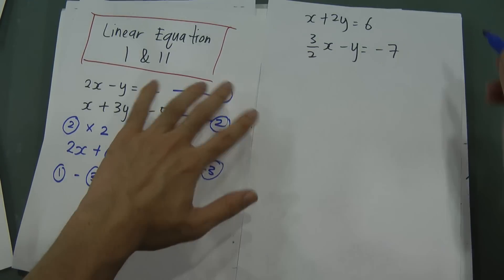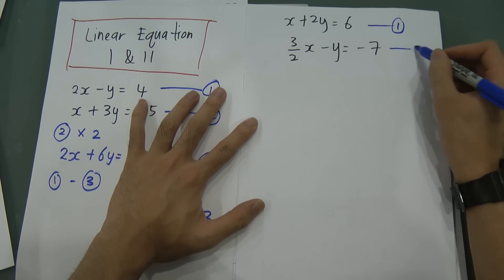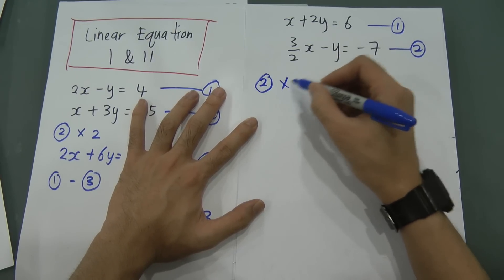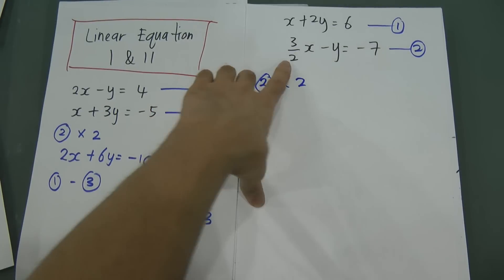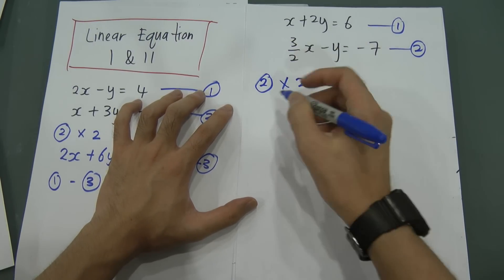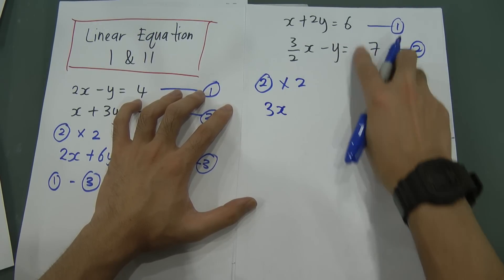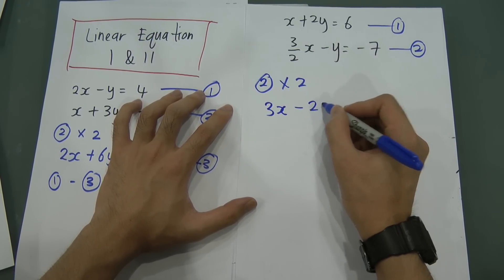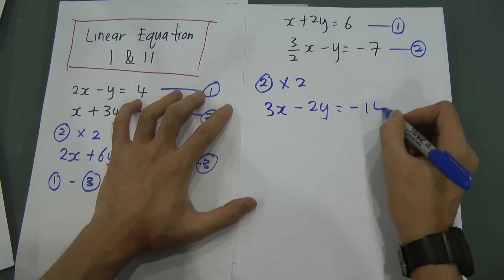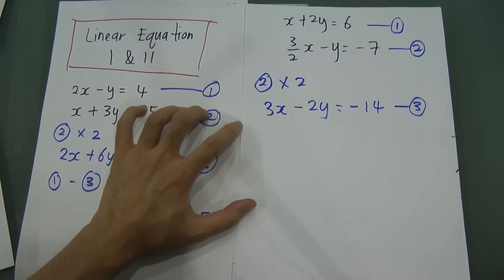I let the first equation be x plus 2y equal to 6, and the second equation be 3 over 2 x minus y equal to negative 7. I use the second equation multiplied by 2 to delete the fraction. So this becomes 3x, negative y times 2 becomes negative 2y, and negative 7 times 2 becomes negative 14. I call this the third equation.